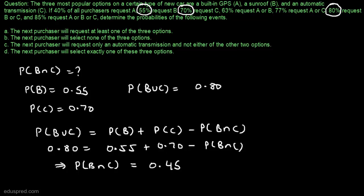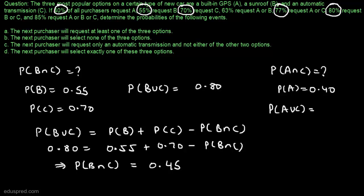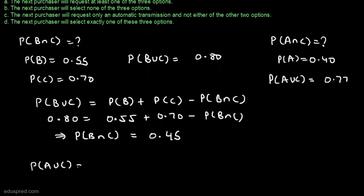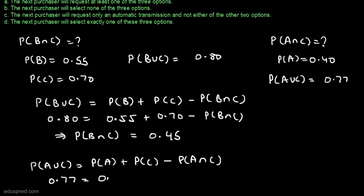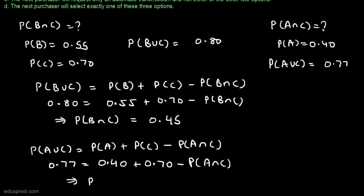Similarly, to find P(A ∩ C): we are given P(A) = 0.40, P(C) = 0.70, and P(A ∪ C) = 0.77. Using P(A ∪ C) = P(A) + P(C) − P(A ∩ C), we get 0.77 = 0.40 + 0.70 − P(A ∩ C), giving P(A ∩ C) = 0.33.